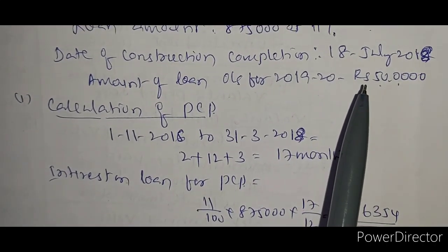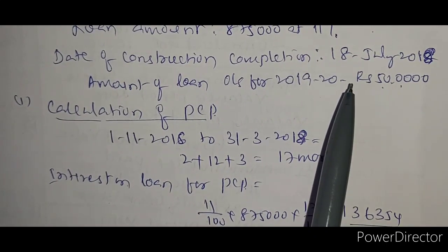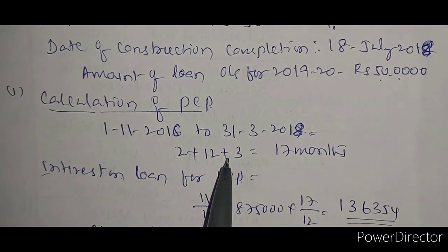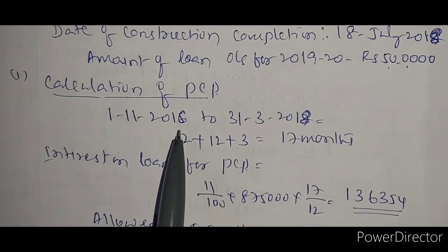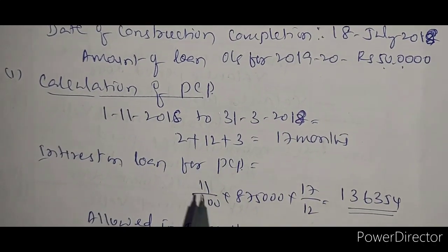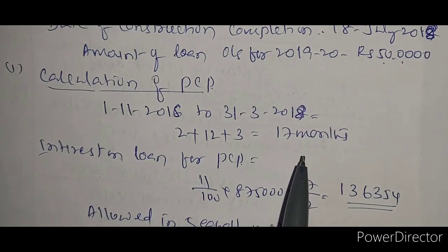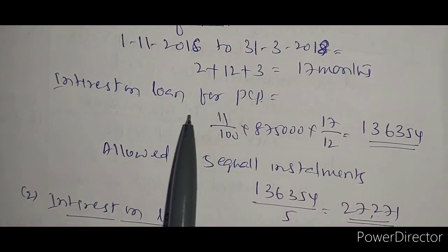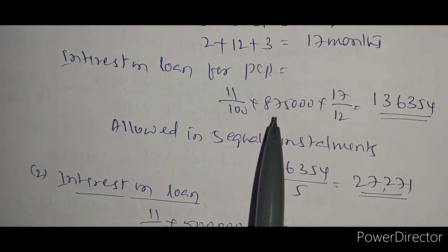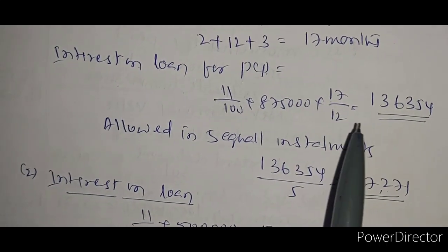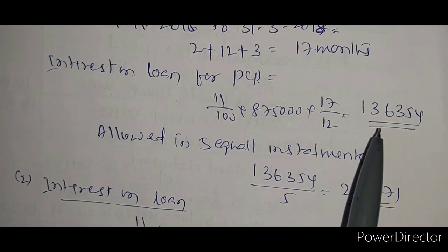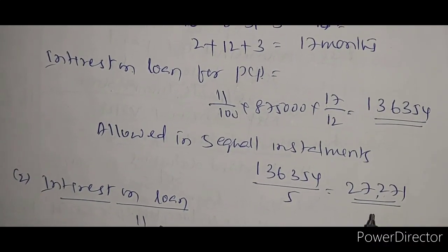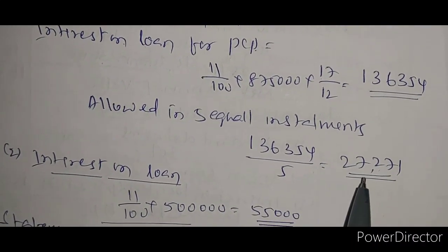The date of completion is 31st March 2018. From 1st November 2016 to 31st March 2018 we have 17 months, called the pre-construction period. Interest for PCP: 11% of eight lakh seventy five thousand, multiplied by 17 divided by 12, equals one lakh thirty six thousand three hundred fifty four. Allowed in 5 equal installments: one lakh thirty six thousand three hundred fifty four divided by 5 equals twenty seven thousand two hundred seventy one. This is called interest on loan for pre-construction period.